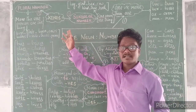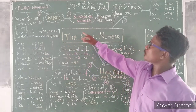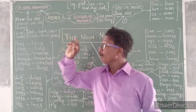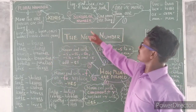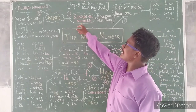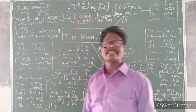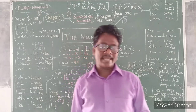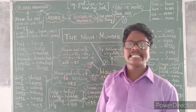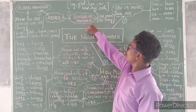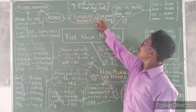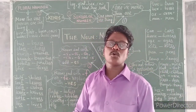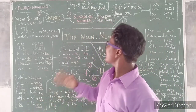There are two kinds. The first one is a singular number. What do you understand by a singular number? A singular number is one person or one thing. That is called singular number.